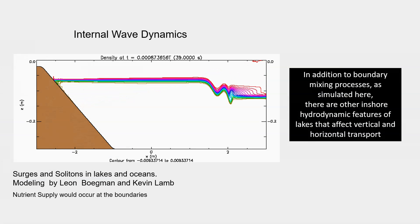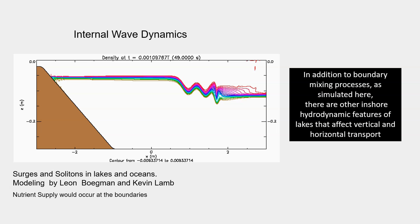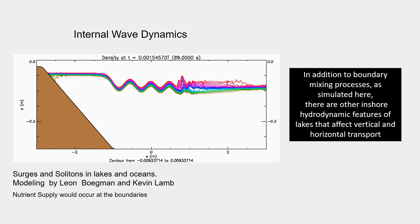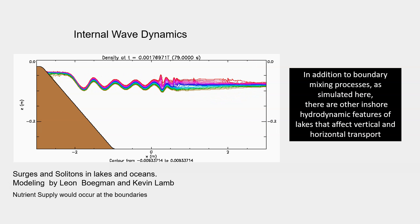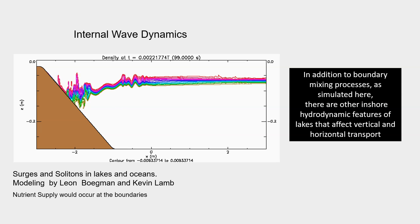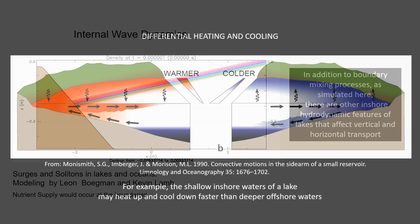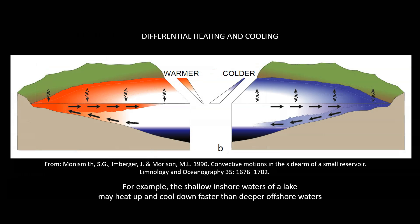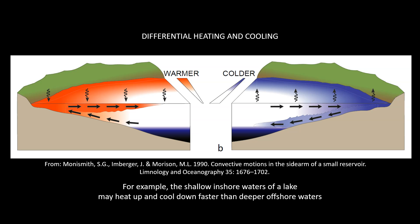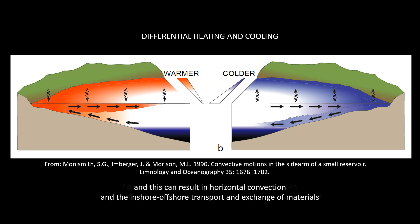In addition to boundary mixing processes, there are other inshore hydrodynamic features of lakes that affect vertical and horizontal transport. For example, the shallow inshore waters of a lake may heat up and cool down faster than deeper offshore waters, and this can result in horizontal convection and the inshore-offshore transport and exchange of materials.